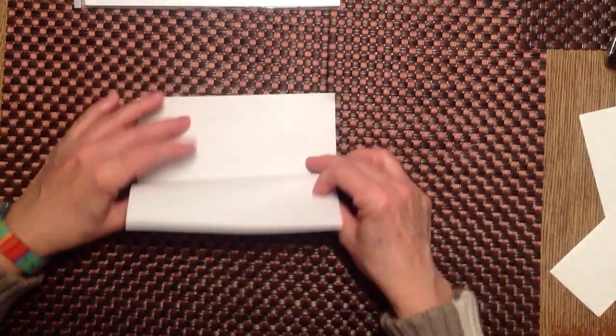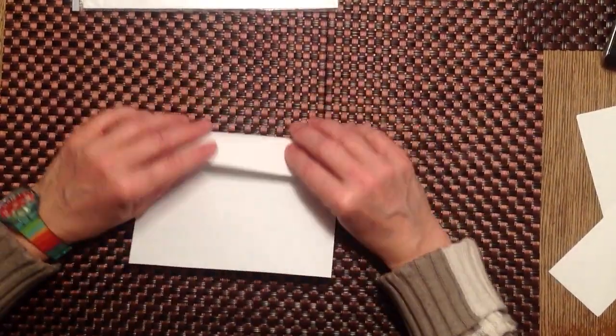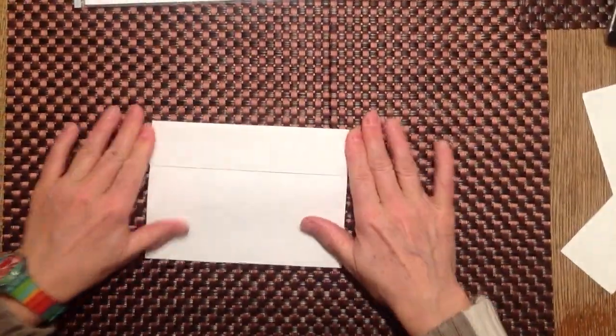Just like this. Open the paper up at this stage. Now we're going to fold the top half down towards the middle. Make a crease.